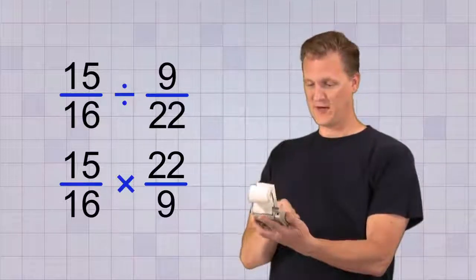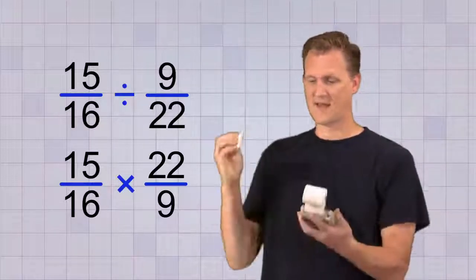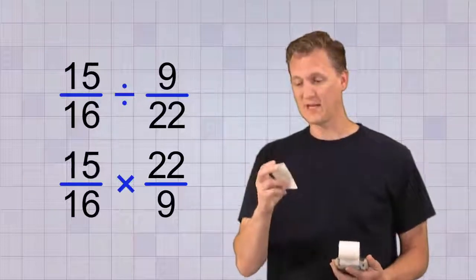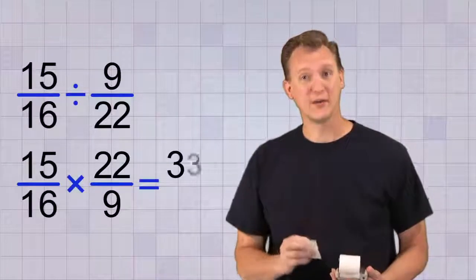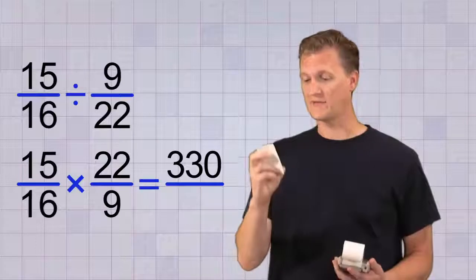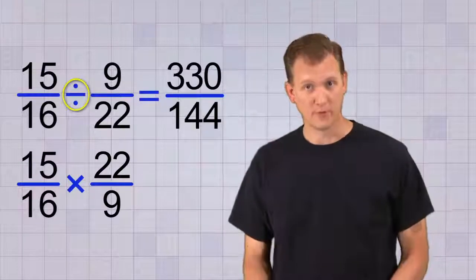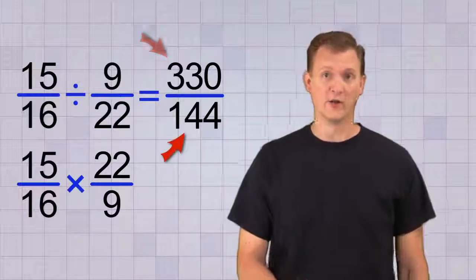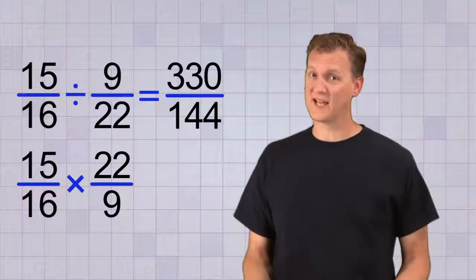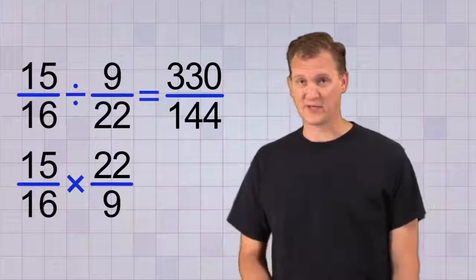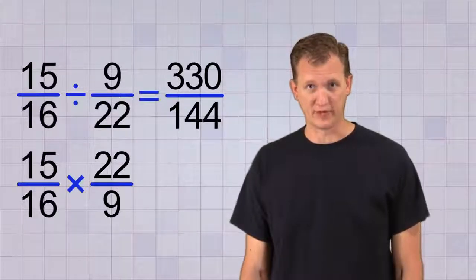Let's see here. So we have, alright. On the top, we have 15 times 22 equals 330. And on the bottom, we have 16 times 9 equals 144. So the answer to our division problem is 330 over 144. Of course, that could be simplified for your final answer on a test, but we cover simplifying fractions in another video.